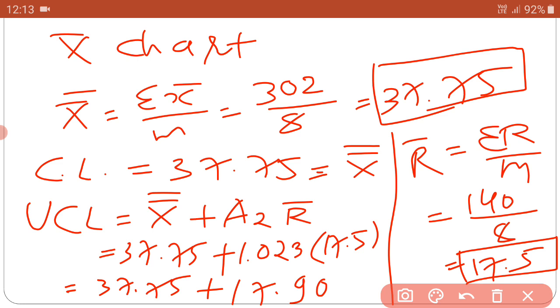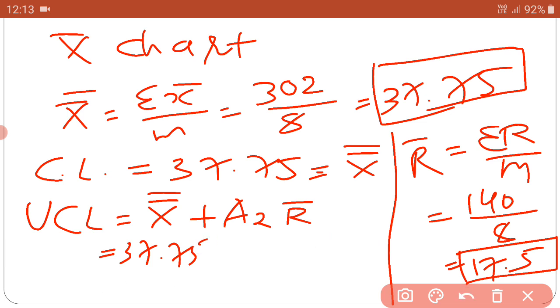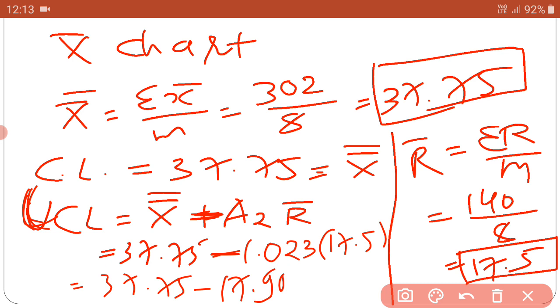And one time minus for LCL. This answer, A2 1.023 into 17.5. So 37.75 minus 17.5 multiply 1.023, which is 17.90. Minus, 37.75 minus 17.90. So you get the answer 19.85.